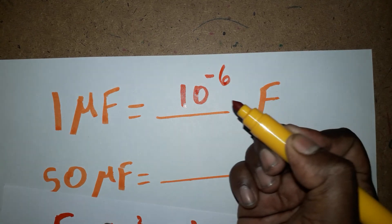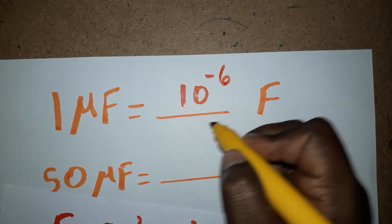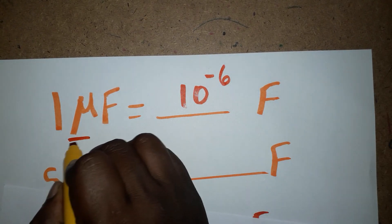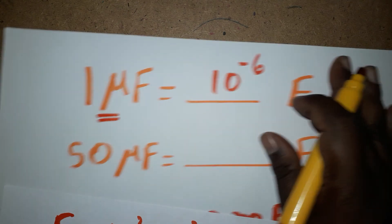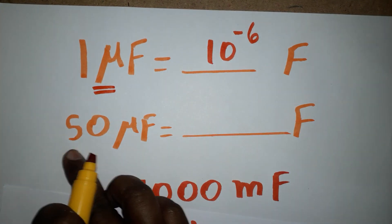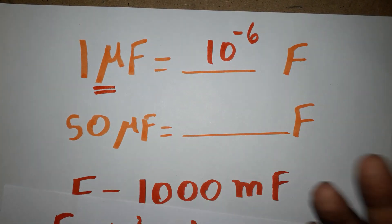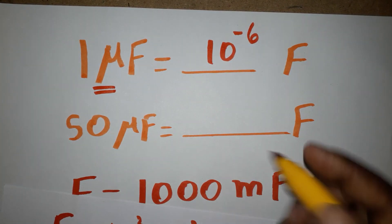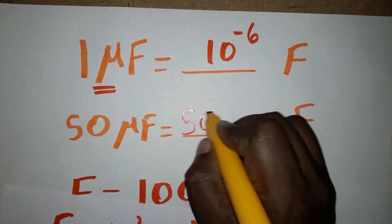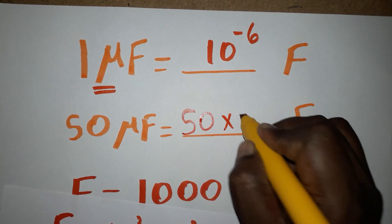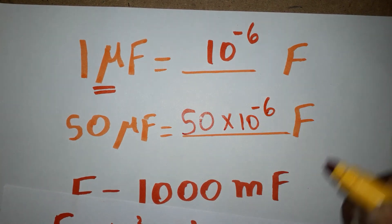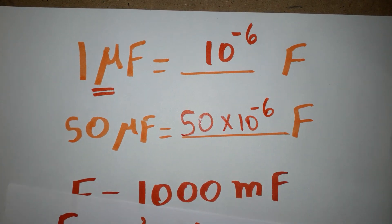Whenever 10 power minus 6 appears, you can use the micro symbol (µ). For example, 50 micro farads is equal to 50 into 10 power minus 6 farads.